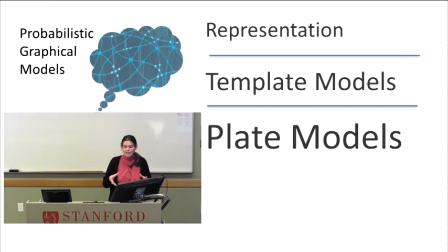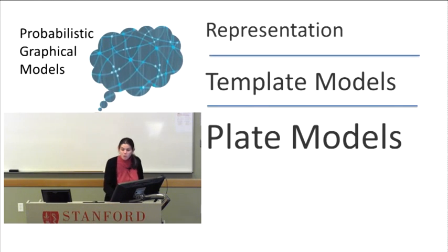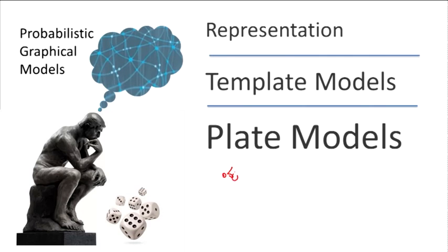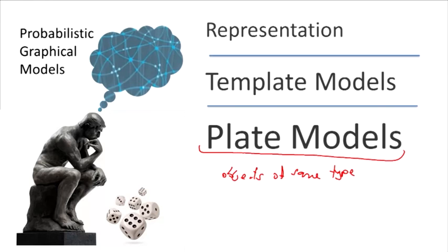One very common kind of repeated structure occurs when we have multiple objects of the same type, where we want to have all these different objects of the same type that all have a similar, or in fact the same, probabilistic model. For reasons we'll talk about momentarily, one of the most common types of such models is called the plate model.